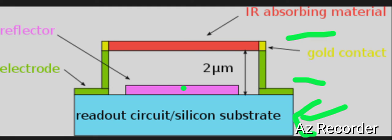A thin film called IR absorbing material is deposited. What happens is that when infrared radiation falls on this red IR absorbing material, the material absorbs those infrared waves and heats up.